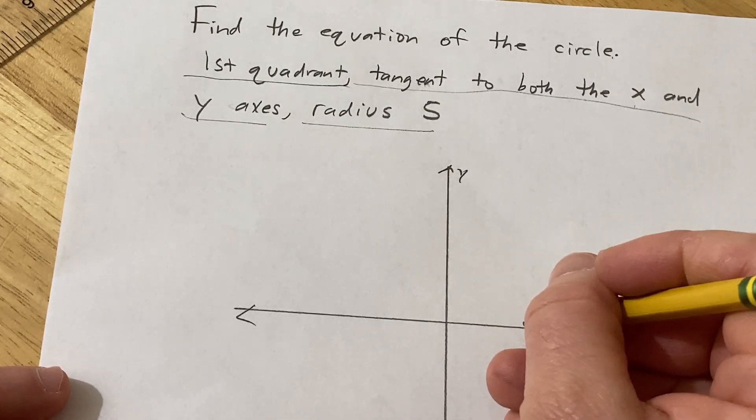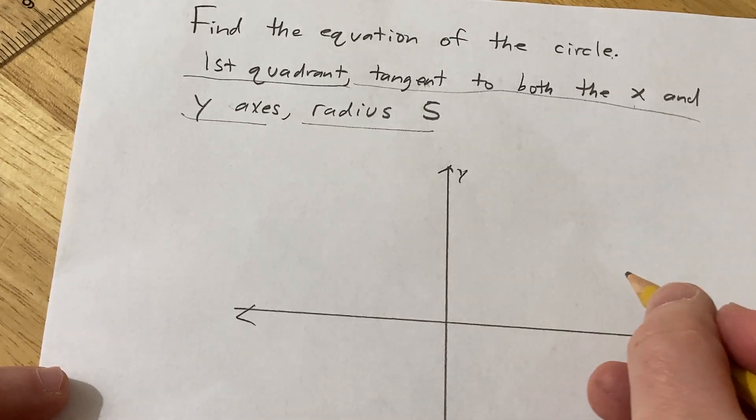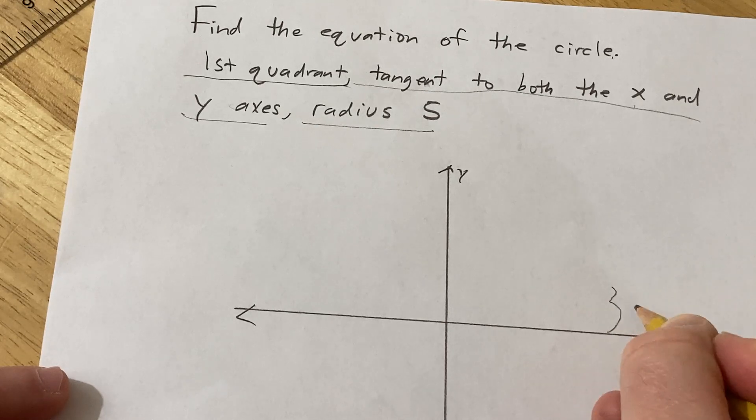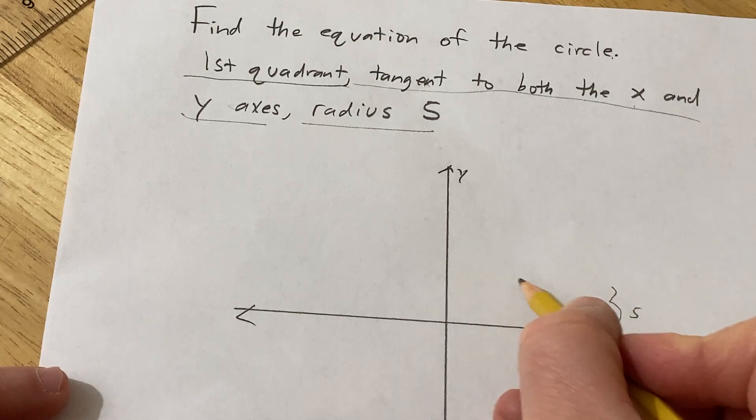If it just touches the x-axis and the radius is 5, that means it has to be a distance of 5 up. The center has to be somewhere over here in the first quadrant.